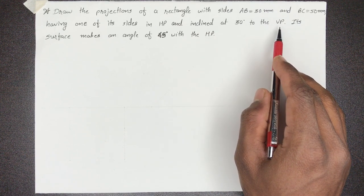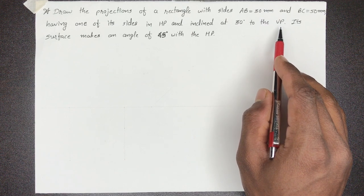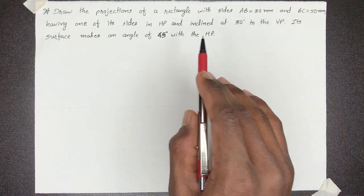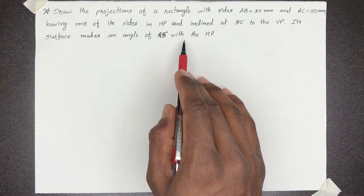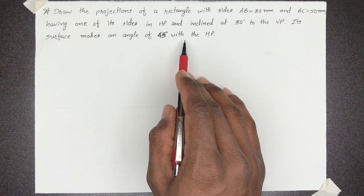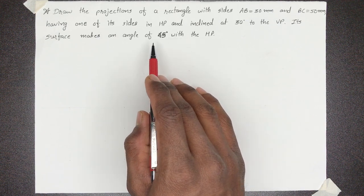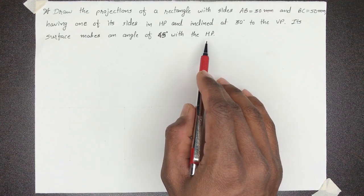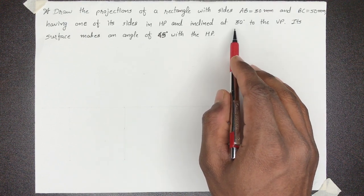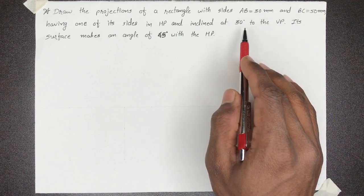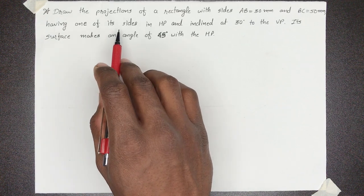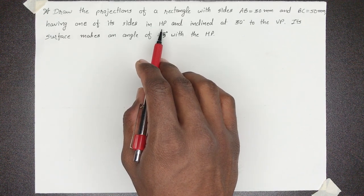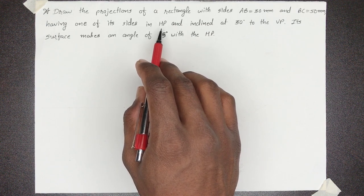जब दो inclinations हों तो सबसे पहले surface inclination find करनी है. Surface HP के साथ 45 degree पे है तो Step 1 में surface को parallel to HP assume करेंगे और Step 2 में surface inclination draw करेंगे. Edge inclination है 30 degrees with VP जिसे हम last step में draw करेंगे. यहाँ पे rectangle की एक edge HP में है, तो Step 1 में rectangle को horizontal plane में ही assume करेंगे.